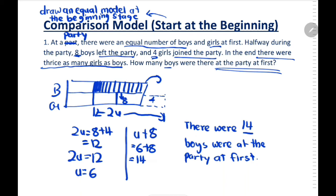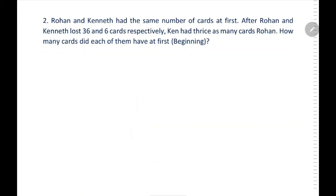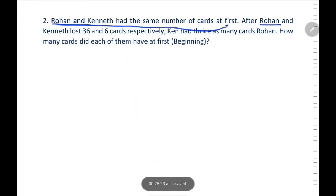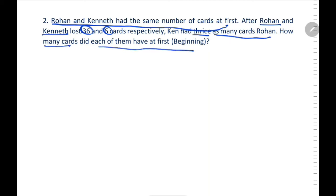Now let's move on. Rohan and Kenneth had the same number of cards at first. After Rohan lost 36 and Kenneth lost 6 cards respectively, Ken had thrice as many cards as Rohan. How many cards did each of them have at first?